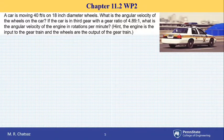Here we have a car that is moving with a speed of 40 feet per second on 18 inch diameter wheels. We're interested in knowing the angular velocity of the wheels on the car, so let's look at first a diagram of the wheel.